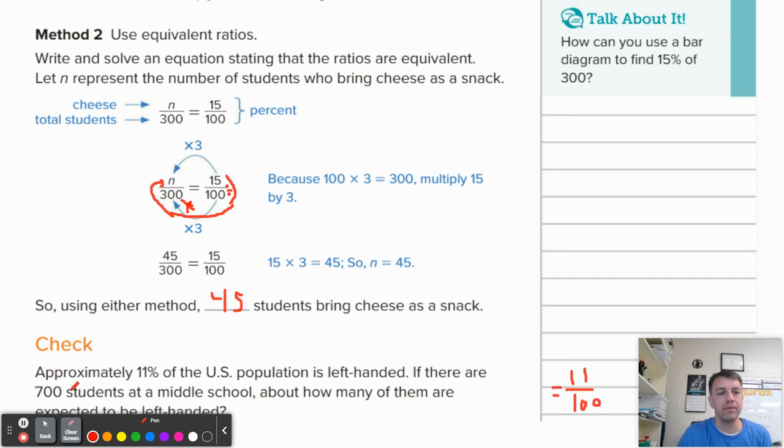We're going to set that equal to, well, 700 is the whole number, right? Because there's 700 total in school. We want to know the part. So we're going to take 11 divided by 100. I've already lost my calculator. There it is. So 11 divided by 100 gives me 0.11. We're going to multiply that by 700. And we find our answer to be 77. Probably should have known that just looking at those numbers, but either way. So there you go. 77 students will be expected to be left-handed.